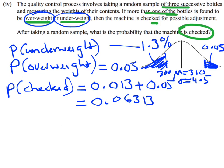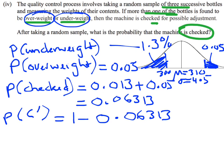When we're looking at three successive bottles, we need to consider both the chance that the machine is going to be checked and the chance that it's not going to be checked. The chance that it's not checked — I put a little dash next to C, meaning 'not' — since all probabilities add up to 1, if I do 1 minus the chance it's been checked, that gives me the probability it's not checked: 0.93687.